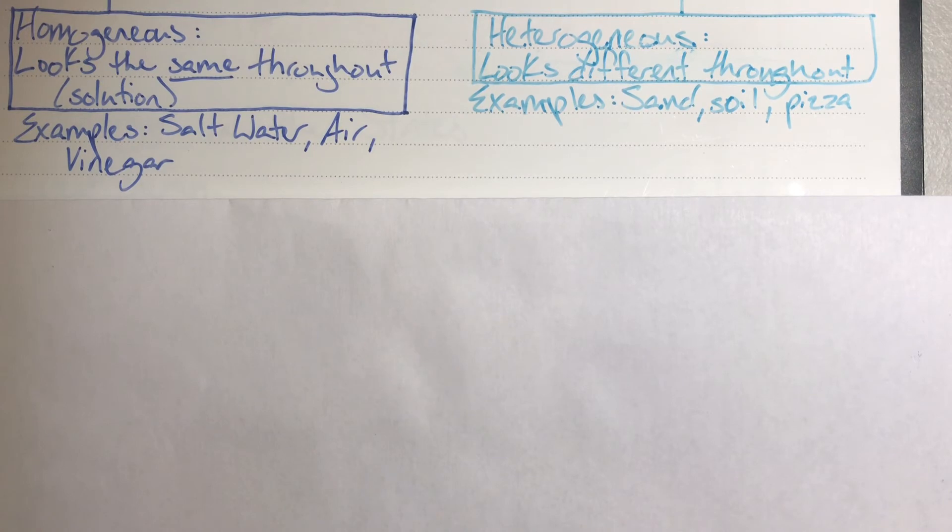We also have some examples of a heterogeneous mixture. Remember that these are going to look different throughout. Sand—you can tell the difference between the sand particles, some look darker, some look lighter, you can see the difference of their shape. Since they do not look the exact same throughout, it is a heterogeneous mixture. So is soil or pizza, salad, lots of things. If you can see the individual pieces, it's going to be a heterogeneous mixture.